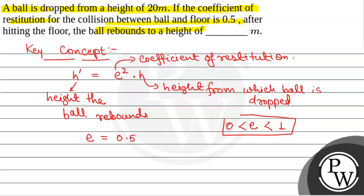So we will solve this. H' will be equal to 0.5 whole square. H is given as 20 meter. So that will be equal to 0.5 whole square. On solving, we will get the value of H' is 5 meter.